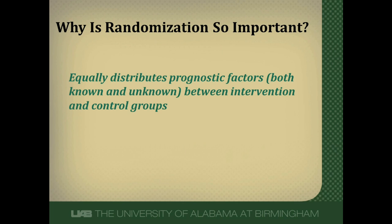So why is randomization so important? The reason is that it equally distributes prognostic factors — things that impact whether a patient develops an outcome of a disease or not. Importantly, it equally distributes not just the known prognostic factors, but also things we don't know about, things we either didn't measure or don't even know exist, will be equalized between the intervention and control groups. For example, CRP comes to mind: when researchers went back to studies done decades ago, measured CRP from stored sera between the two groups, CRP levels were exactly the same between intervention and control groups — even though back then we didn't even know CRP was a risk factor. The true power is really the equal distribution of unknown prognostic factors between groups.